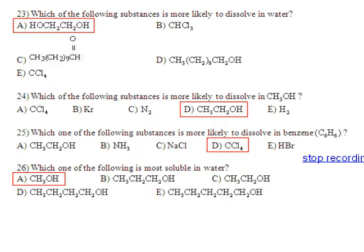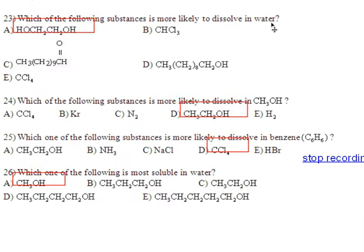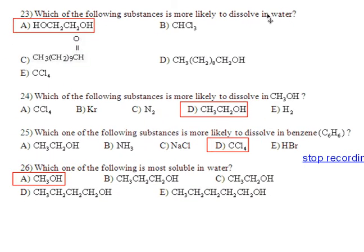Number 23, again, you have to draw the water in this case. The water is obviously polar. We've seen that a million times. And it would make hydrogen bonds with this one the strongest because this has hydroxides here and here. With two hydroxides, that would be the best at dissolving into the water.